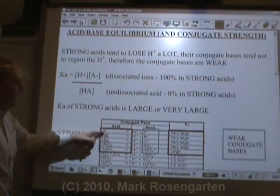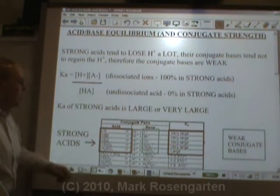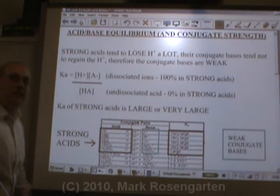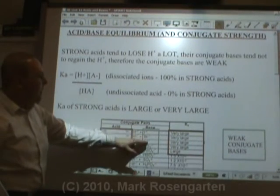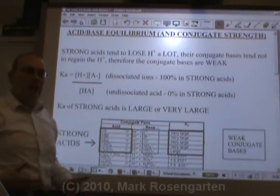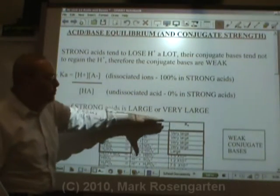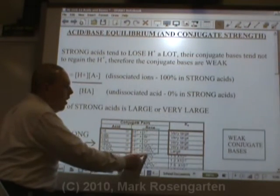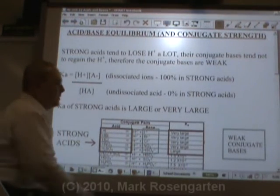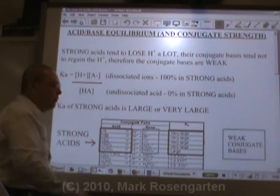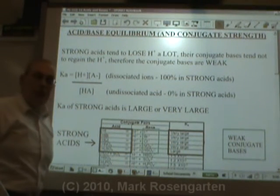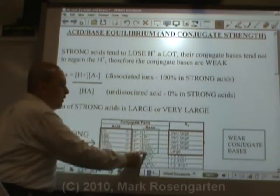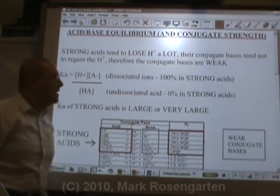These top six acids on the reference table C — HI through H2SO4 — are your strong acids. They ionize completely in water to form very weak conjugate bases. Think about equilibrium: if the forward reaction goes to completion, that means the reverse reaction doesn't even get started. These ions are almost impossible to pick back up the H+1 and reform the acid. The equilibrium isn't even really there — they go to completion. Full and complete ionization, so these bases are not going to be picking up hydrogens anytime soon. They're very weak.